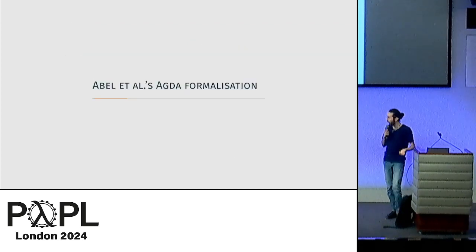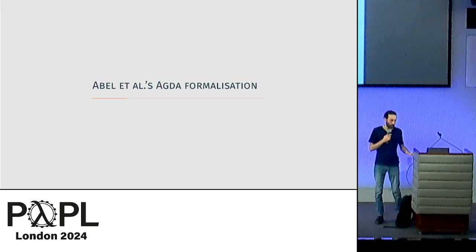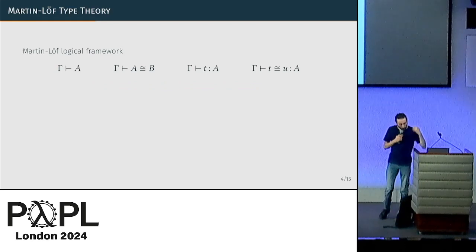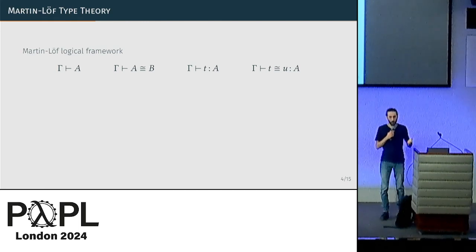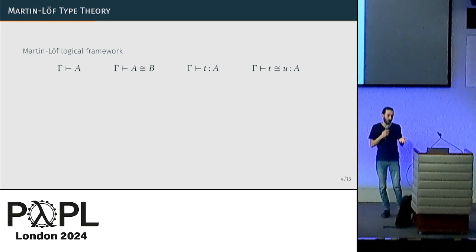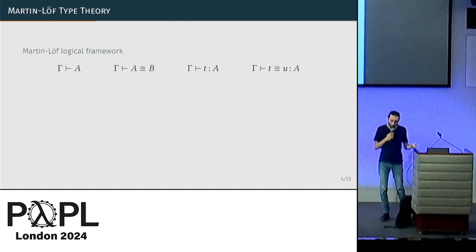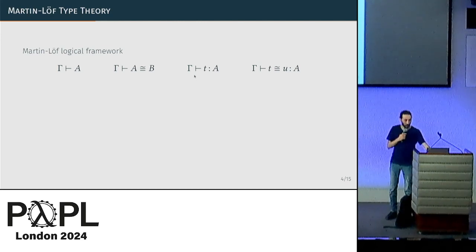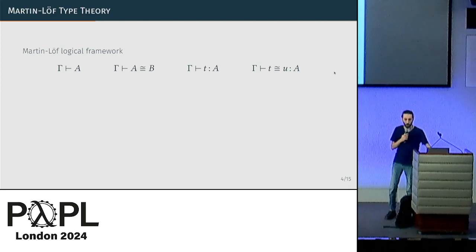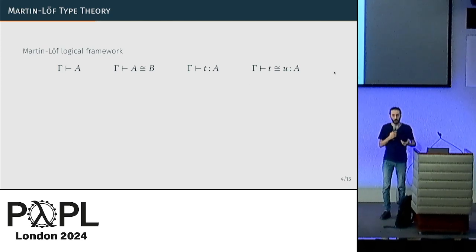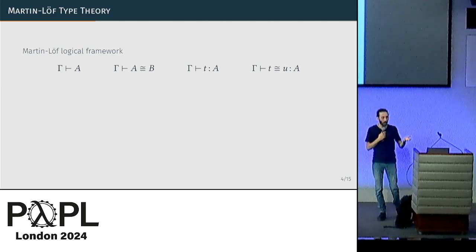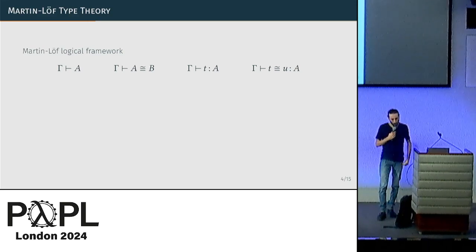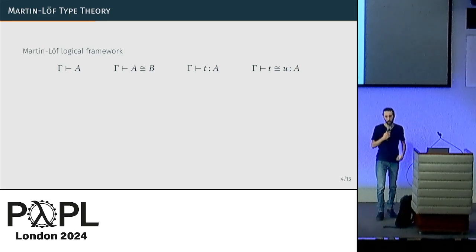Before I tell you what we've done, I need to tell you a little about what's happening in the Agda formalization, since the core ideas are very similar. The basis we're working with is this Martin-Löf type theory — a big family of dependent type theories sharing four main judgments: a typing judgment, a well-formedness judgment for types, and two conversion judgments that identify things which should be equated from the point of view of the type system.